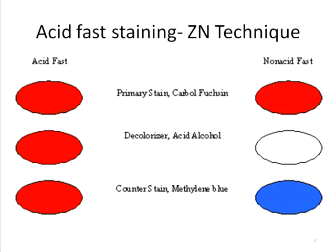Non-acid-fast bacteria are not able to resist the acid and may get decolorized in the second step, so they lose the first color — that is the red primary dye, carbol fuchsin — and take up the second dye, that is the blue-colored dye methylene blue, and will appear blue in color. So they are non-acid-fast.